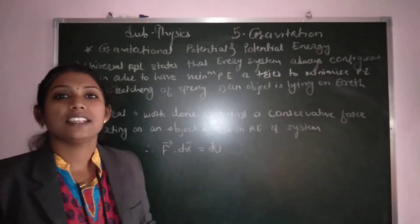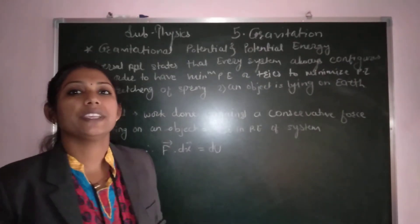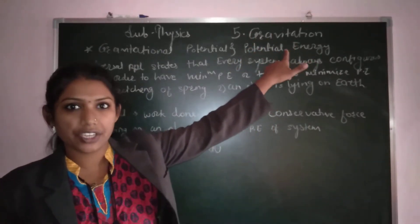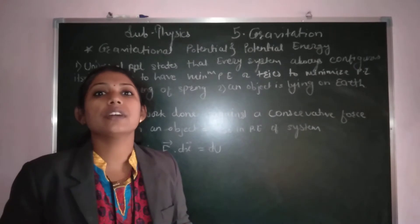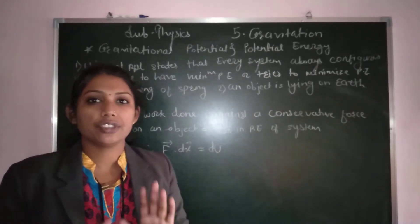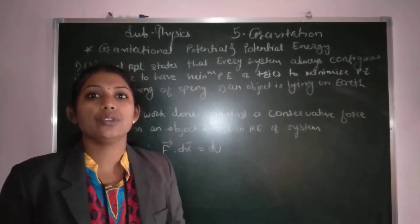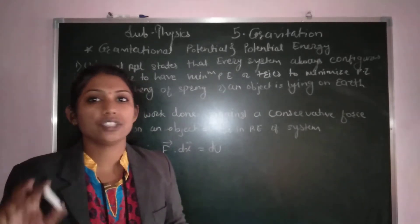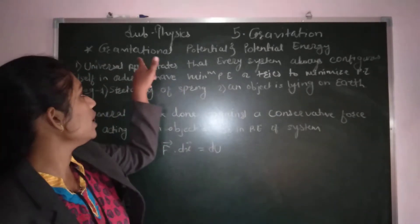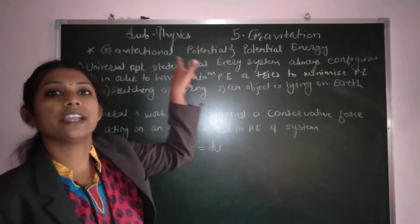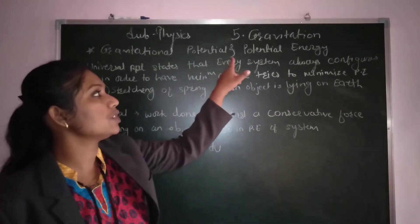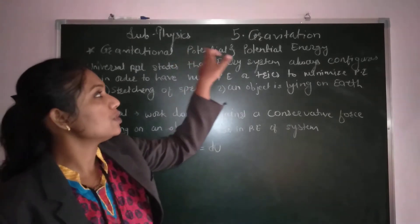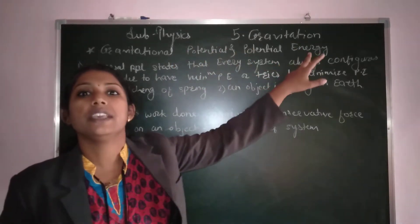Hello dear friends. As per the last topic, we have started chapter number 5 on gravitation. In the last topic we covered the acceleration due to gravity and its variation depending upon depth, altitude, latitude, and the shape of the earth. Now today we are going to start the next point: gravitational potential and potential energy. Our today's topic is gravitational potential and potential energy.